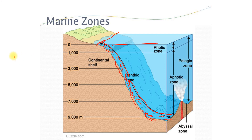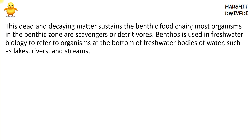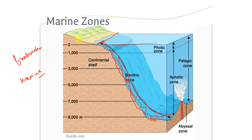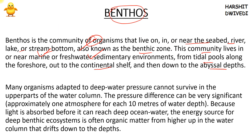The benthic zone is present everywhere — in freshwater ecosystems like ponds, streams, and lakes, and also in marine ecosystems like seas and oceans. The community of organisms that live in the benthic zone live near the seabed, river, lake, and stream bottom. This community lives in marine water, freshwater sedimentary environments, tidal pools, continental shelf, and abyssal depths. In the figure, you can see the continental shelf, continental slope, and abyssal plain — benthic zones are formed in all of these areas.